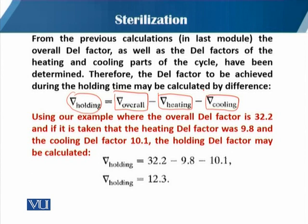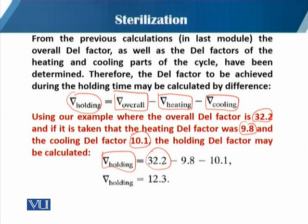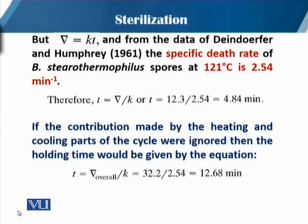Taking the previous example where we are dealing with Bacillus stearothermophilus: the overall del factor is 32.2, the heating del factor is 9.8, and the cooling del factor is 10.1. Then the holding del factor can easily be calculated: 32.2 minus 9.8 minus 10.1, which gives an answer of 12.3. So 12.3 is the del factor of the holding time.